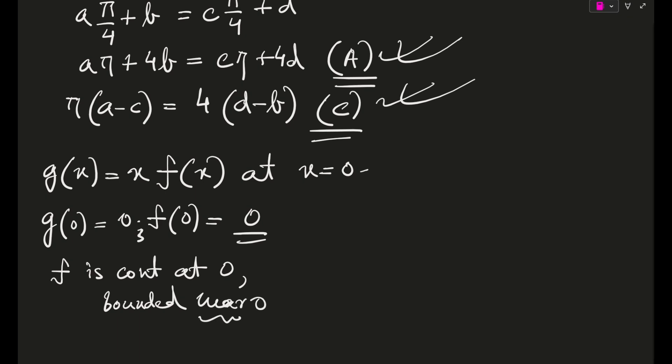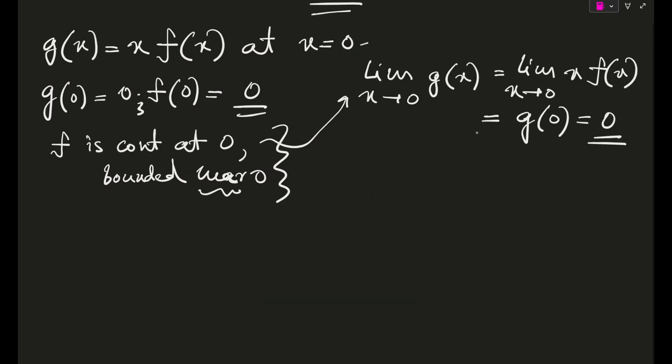So if your f is continuous at 0 and also we can see f is bounded near 0, which means limit of x is tending to 0 of g of x, this thing will be equal to limit x is tending to 0 of x times f of x, which is equal to g of 0, or rather 0. So guys, I hope from this particular point option number D comes out to be correct. But still we have to check on the differentiability.